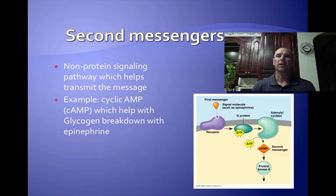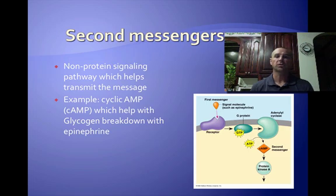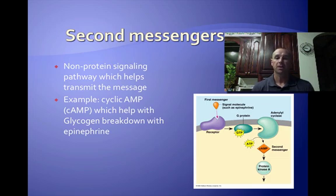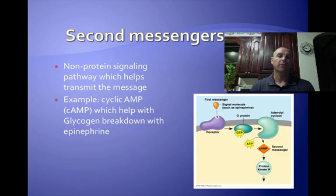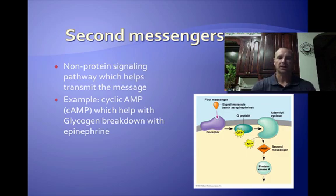In Earl Sutherland's example, the epinephrine wasn't directly causing it, so it had to have some type of second messenger that carried it from one place to another. There are these things called second messengers, which are non-protein signaling molecules that help transmit the message until it finally gets to that cellular response. The secondary messenger in Earl Sutherland's experiment was cyclic AMP, which was later found to help transmit the message from the plasma membrane all the way to the liver cell to help break down glycogen into glucose.